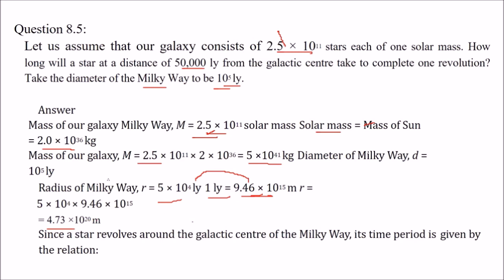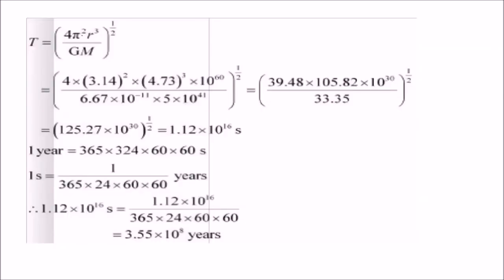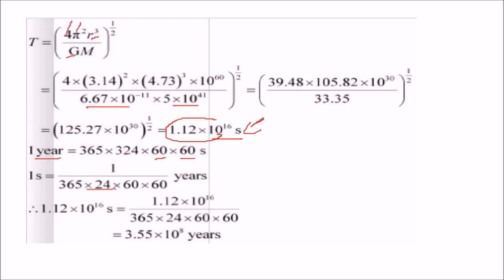Ab kyunki yeh star revolve kar raha hai galactic center ke around, iska time period kaise niklega? Time period formula: T = sqrt(4π²r³ / GM). Hamaarey paas 4π ki value hai, r humne dekh liya, G = 6.67 into 10^-11, mass humne nikaal liya. Saari values rakhein — itna second aayega. Ek year hota hai 365 into 24 into 60 into 60 second. Toh itna second kitna hoga year mein nikalein — aapke paas 3.55 into 10^8 years aa jaayega.